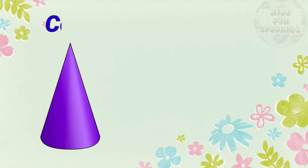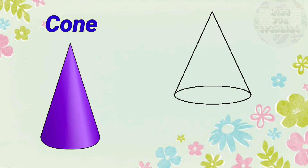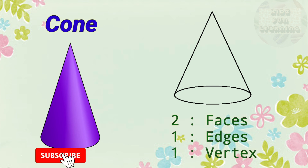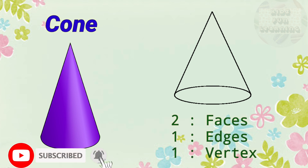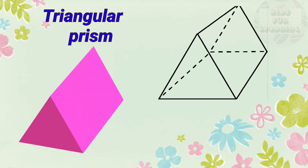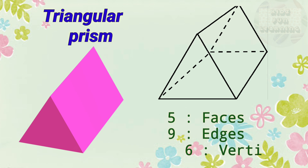Cone: 2 faces, 1 edge, 1 vertex. Triangular Prism: 5 faces, 9 edges, 6 vertices.